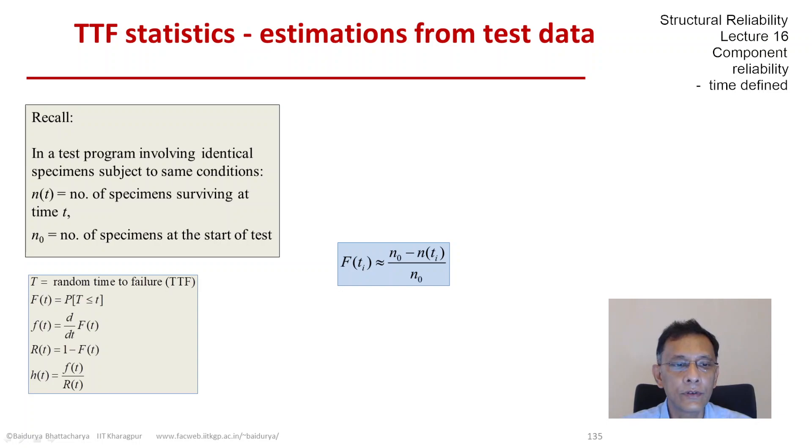The CDF at any time Ti can be estimated by the number of failed samples over the original number of samples. The density function can be deduced from the increment of the CDF over the time over which it happened. So F of Ti plus 1 minus F of Ti, capital F, divided by delta T would give me an estimate of the density function, small f.